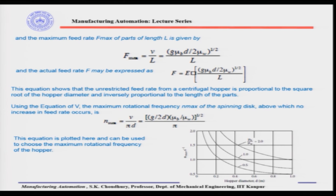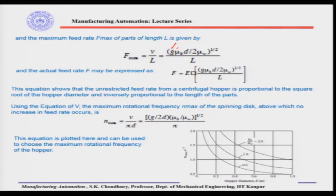We know g; we know the materials of the part, spinning disk, and wall, so μb and μw can be found from handbooks. The hopper diameter d is selected by design, and the part length L is known. Therefore we can find the maximum feed rate exactly. The actual feed rate must be multiplied by the efficiency to get the true feed rate. This is the unrestricted feed rate — valid when the feeder is not connected to the assembly machine — but when connected, we adjust f accordingly to what the assembly machine can accept.